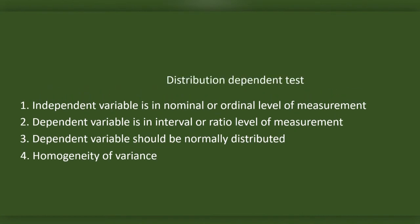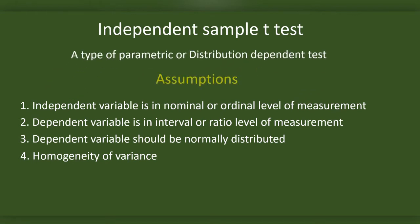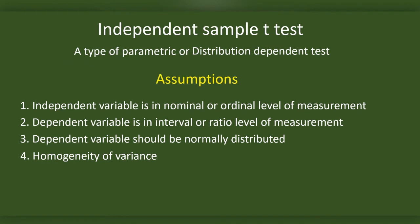The independent sample t-test depends on formalities related to data distribution across categories in the sample, so it is a distribution-dependent test. It is also a parametric test — the sample has to be normally distributed and should represent the population. These are the assumptions of the independent sample t-test.